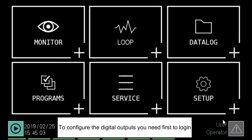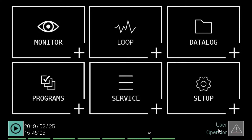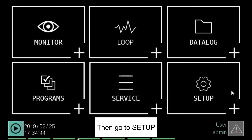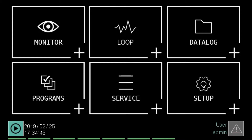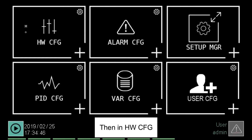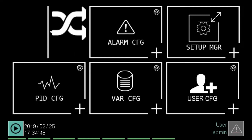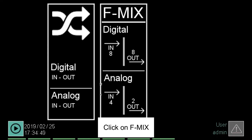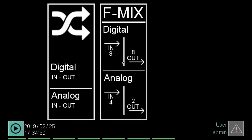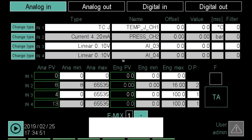To configure the digital outputs, you need first to log in. Then go to Setup. Then, in Hardware Configuration, click on FMix. At the end, click on Digital Output.